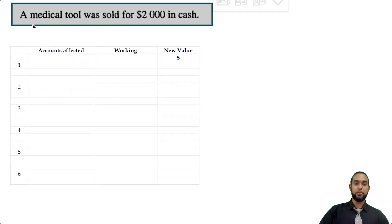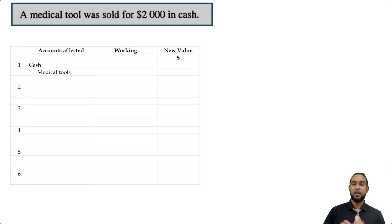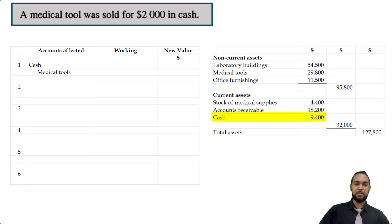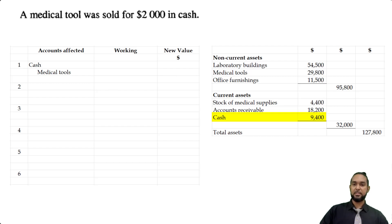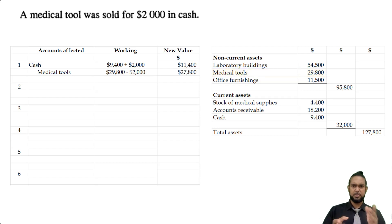The first item says a medical tool was sold for $2,000 in cash. The accounts affected are cash and medical tools. Cash had an initial balance of $9,400 — if we sold that item for $2,000, we add $2,000 to $9,400 for a new value of $11,400. The medical tools value was $29,800. If we sold medical tools, that decreases their value, so $29,800 minus $2,000 gives us $27,800.